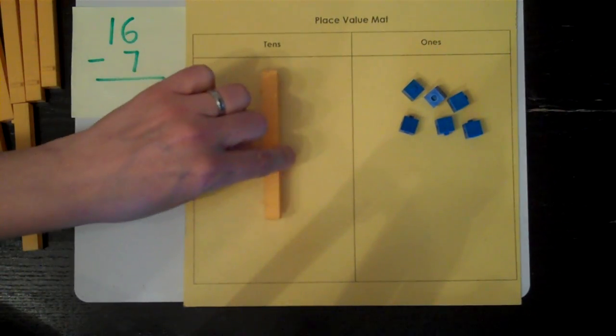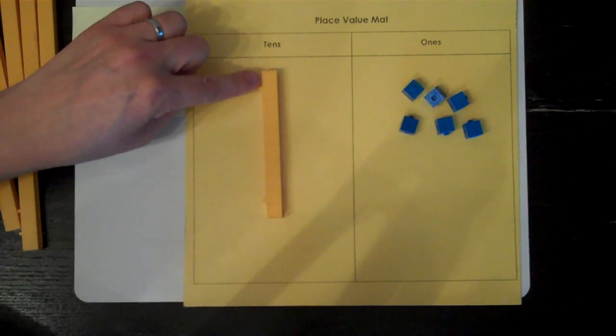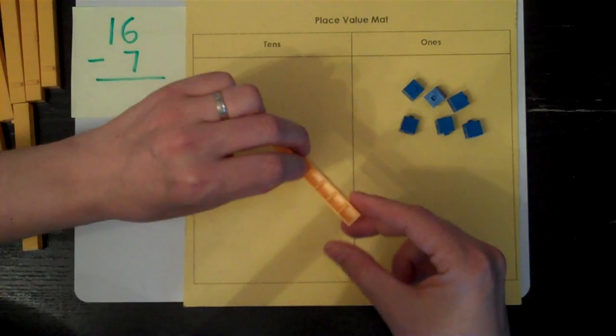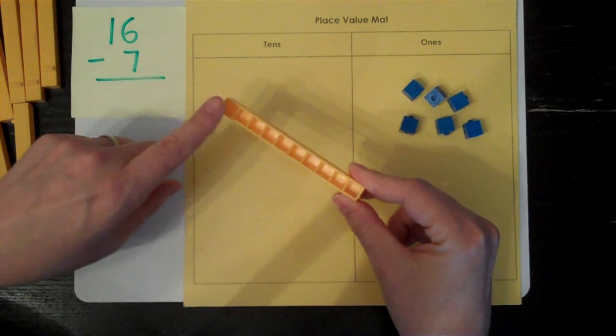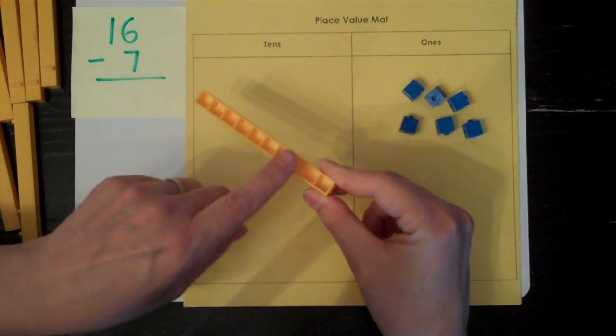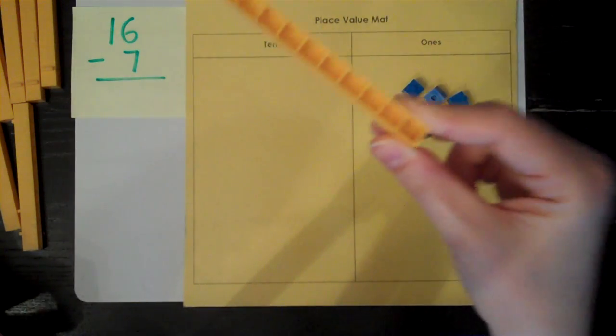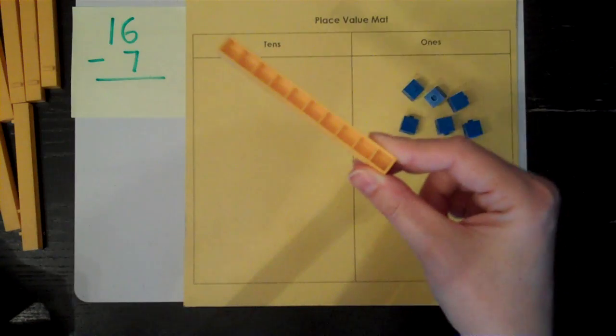I'm going to break down this 10 rod into its small parts. This is made up of 10 ones. One, two, three, four, five, six, seven, eight, nine, ten. So I'm going to trade one 10 for 10 ones.